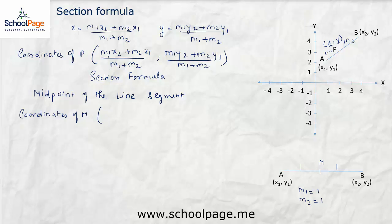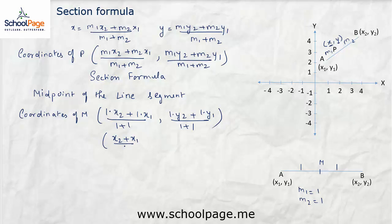Let us use the section formula to find the coordinates of M. Substituting M1 = 1 and M2 = 1, we get: (1·x2 + 1·x1) / (1 + 1), comma (1·y2 + 1·y1) / (1 + 1). So the coordinates of point M are (x2 + x1) / 2, comma (y2 + y1) / 2, which can also be written as (x1 + x2) / 2, comma (y1 + y2) / 2.